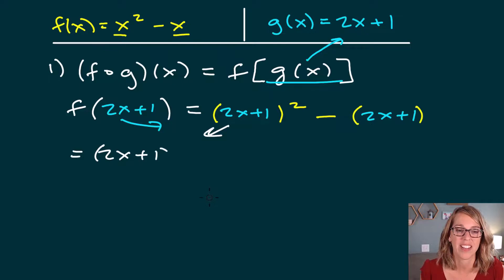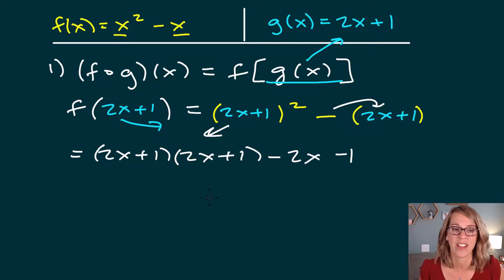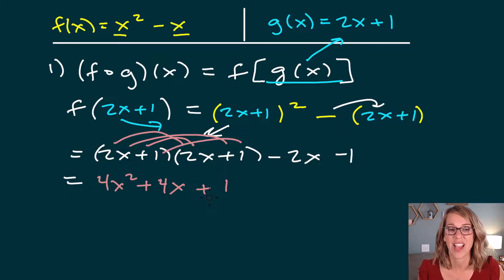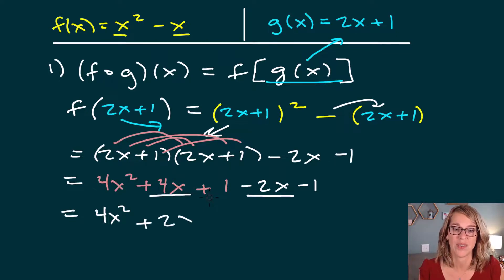But the second part is pretty easy. Let's just distribute that negative sign. Minus 2x and then minus 1. Foiling, we end up with 2x times 2x. That's going to be 4x squared plus 2x plus another 2x. That's going to be plus 4x. And then 1 times 1 is 1. I still on the outside have minus 2x minus 1. Combining my like terms, there are no other x squares. So I end up with 4x squared. But we can do 4x minus 2x. That's going to be plus 2x. And my ones cancel. Plus 1 minus 1. So this is my answer.